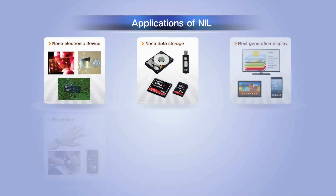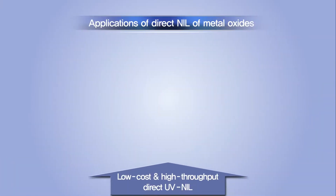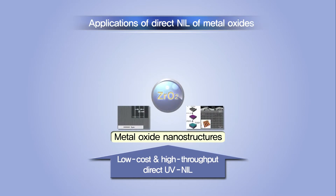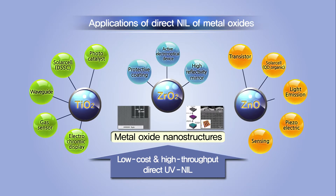Metal Oxide Direct Nano Imprint Lithography Technology can be applied to OLED, LED, solar cells, semiconductor devices, bio devices, and optical sensors. For semiconductor devices, a memory device equipped with 10 nano patterns having a much better degree of integration than current technology can be developed. Bio devices using this process can be used for manufacturing portable or disposable biosensors capable of measuring diseases with ease.